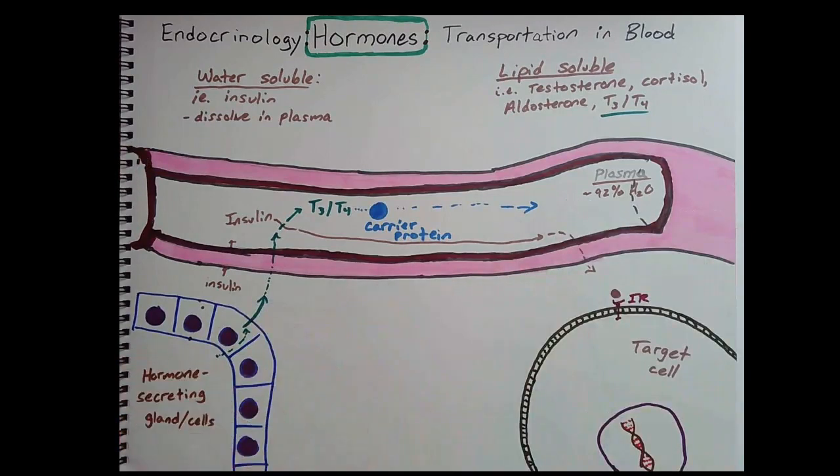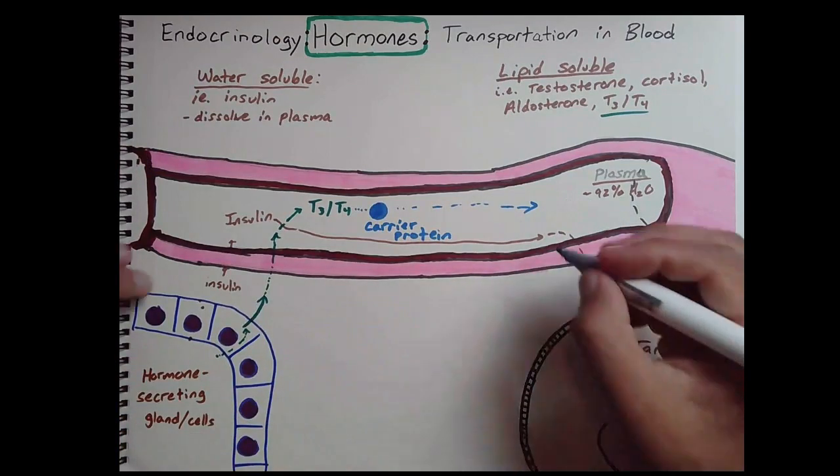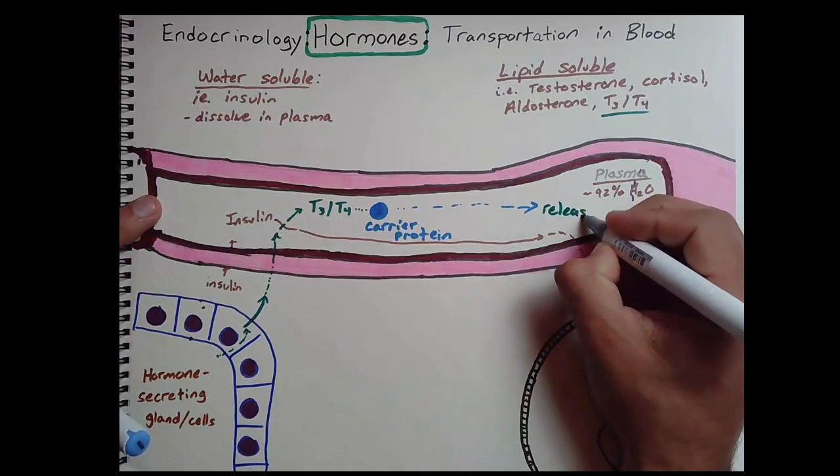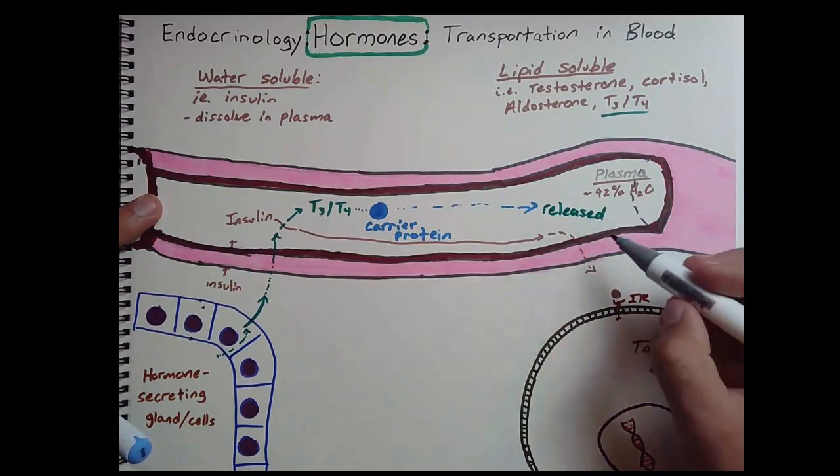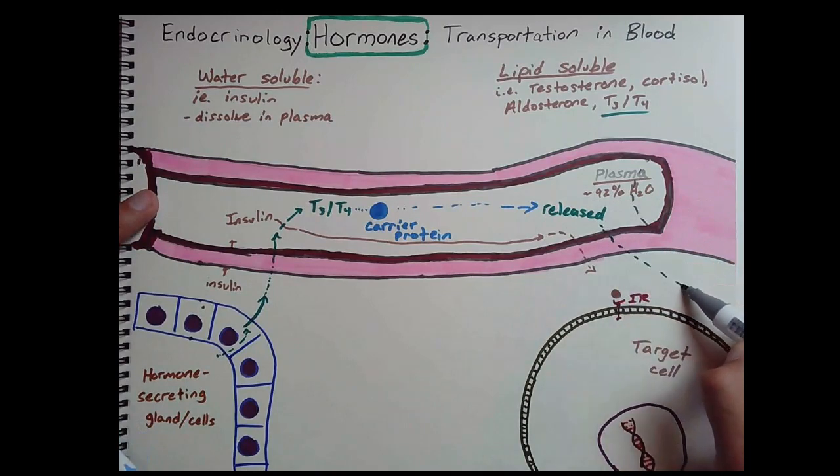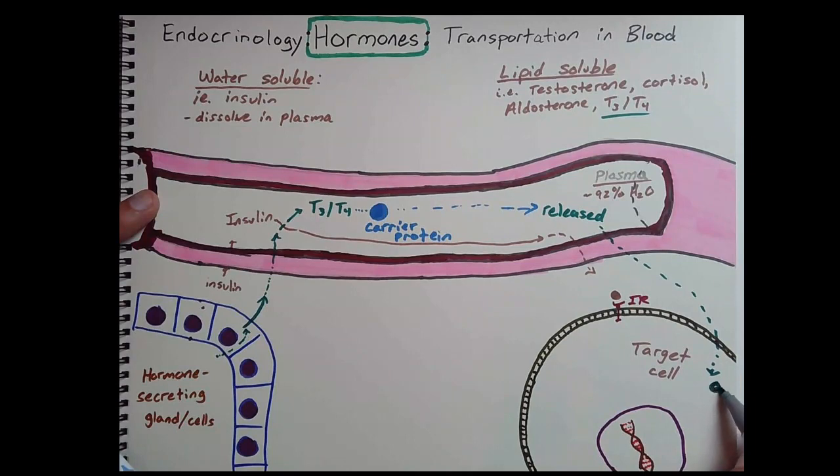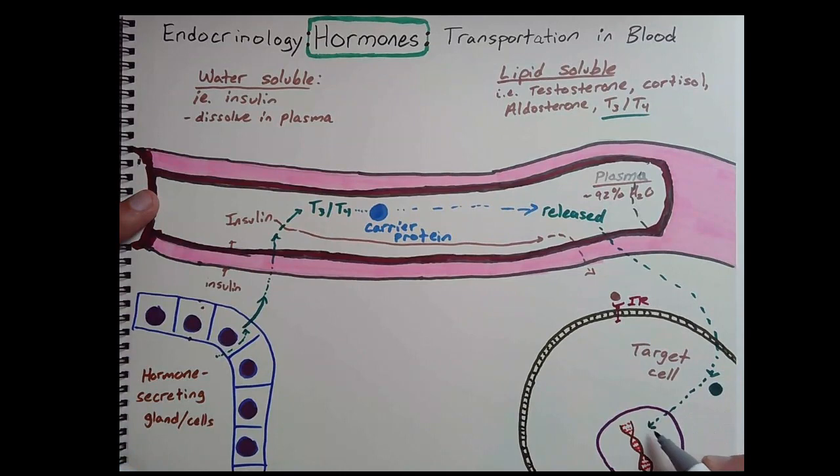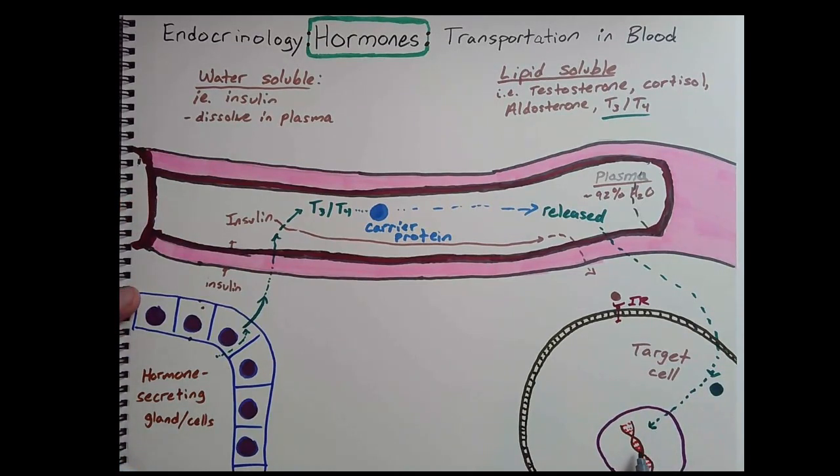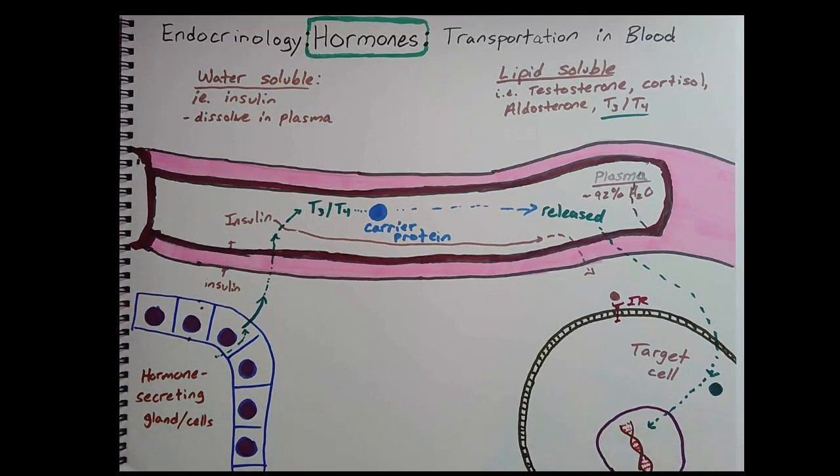And the carrier protein is going to release the T3, T4 at the area around the target cell. And then from there, that T3, T4, once it is released, is going to be able to diffuse from areas of high to low. So it's going to enter the cell. It's going to either bind to a cytosolic receptor, like we saw in the last video, or it can just go straight down, act on transcription factors, talk to the DNA, and help to synthesize proteins.